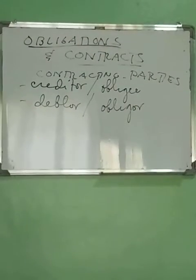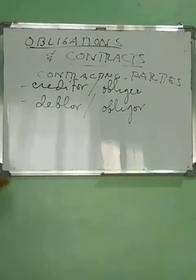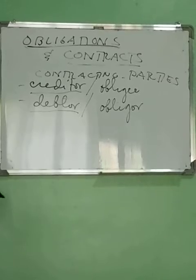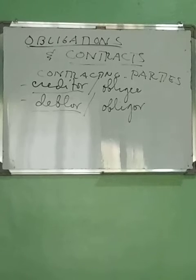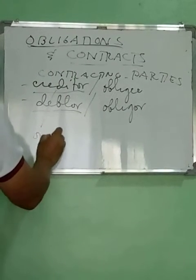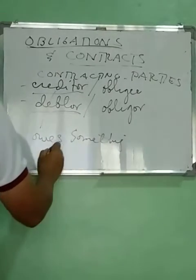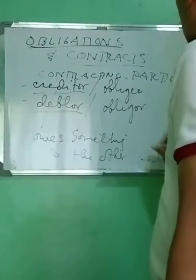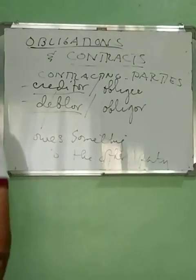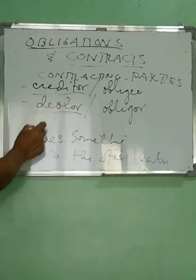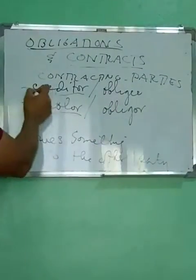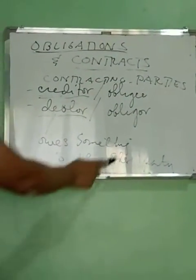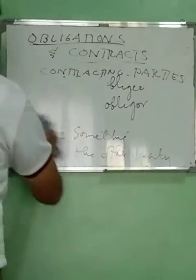I cannot proceed with the discussion of contracts or obligations unless you know these very basic terms. It is the debtor who owes something to the other party, and that other party is, of course, the creditor. The creditor is the one to whom something is owed, and the debtor is the one who owes something to the creditor.